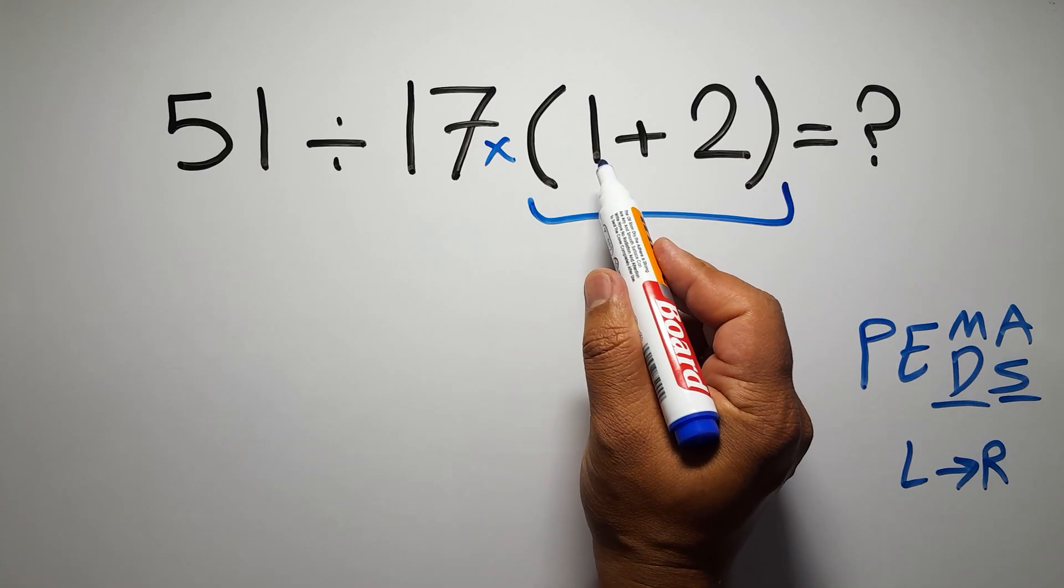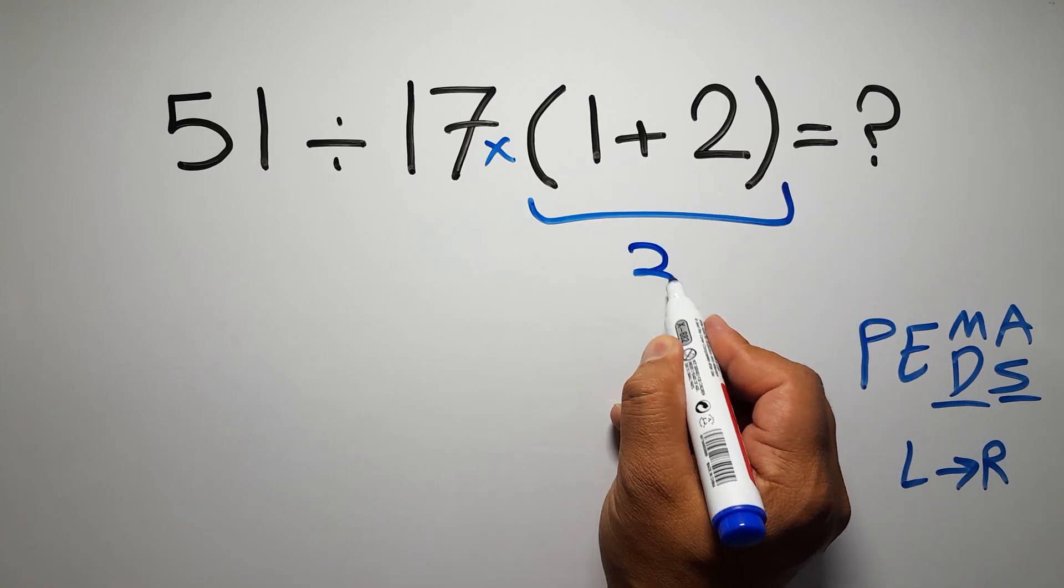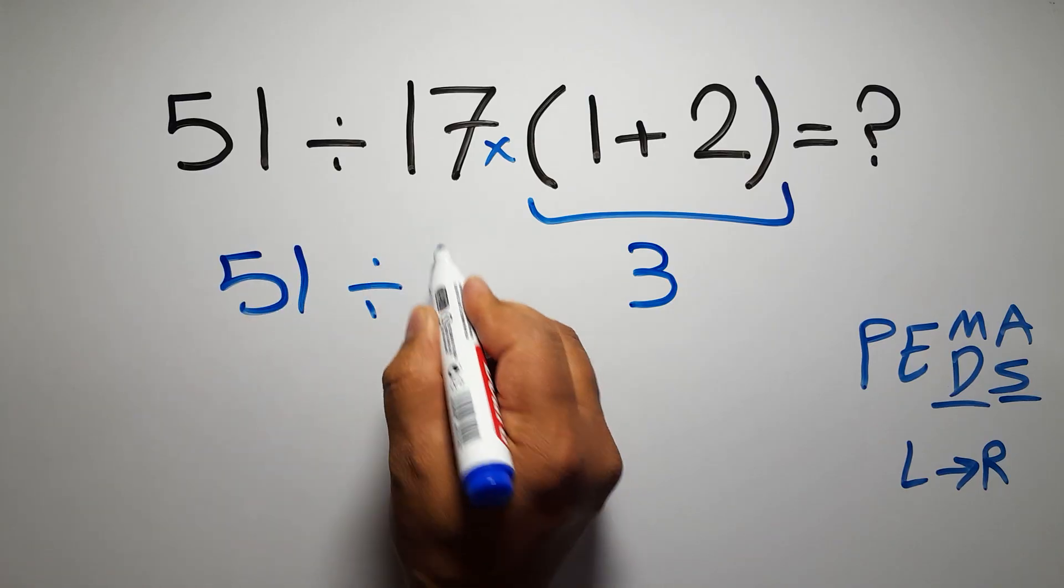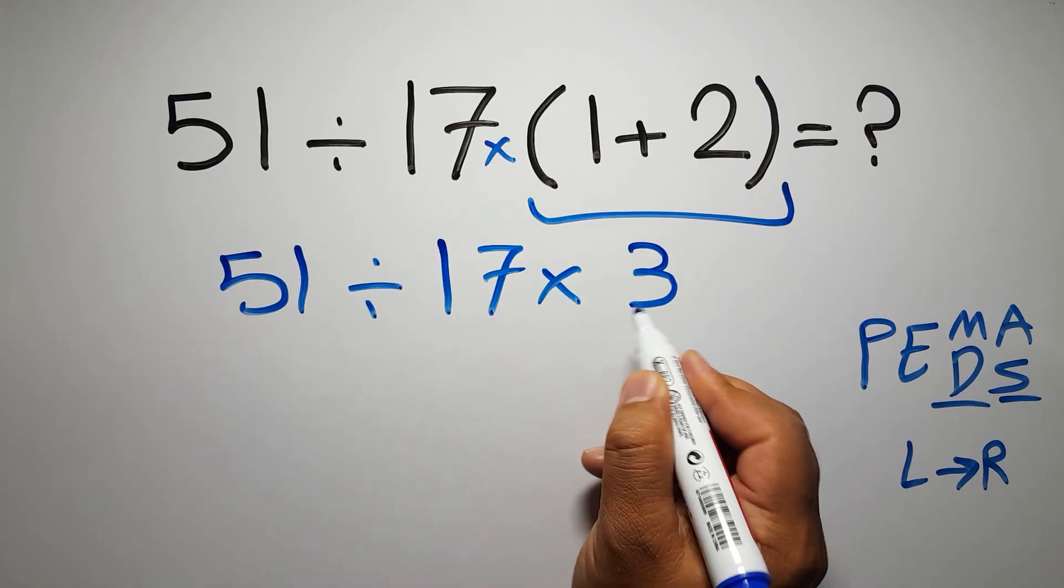So first this parentheses: inside we have 1 plus 2, which equals 3. So we have 51 divided by 17 times 3.